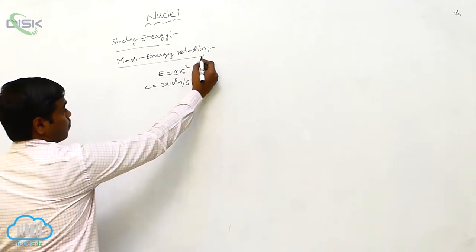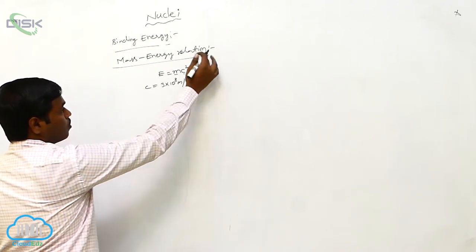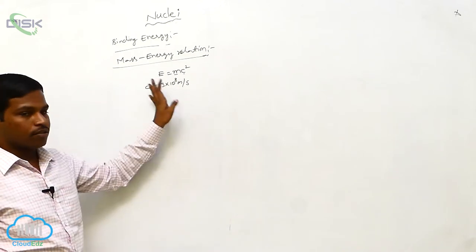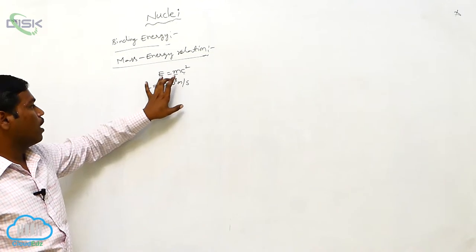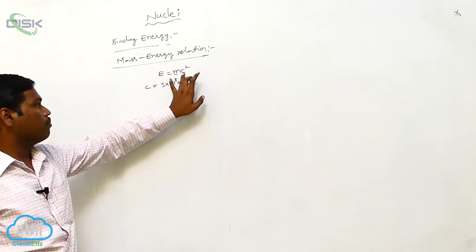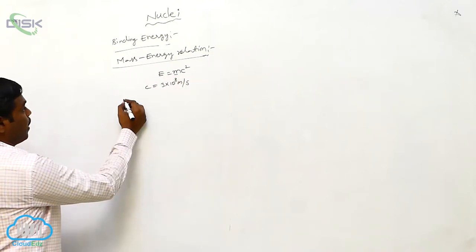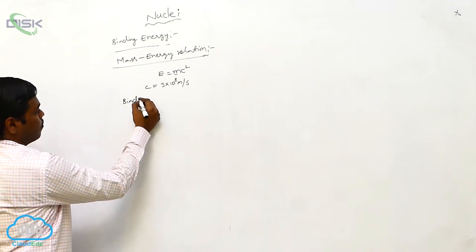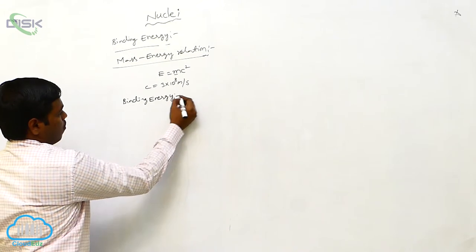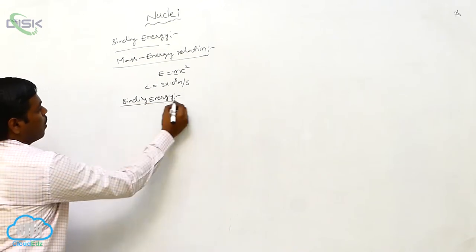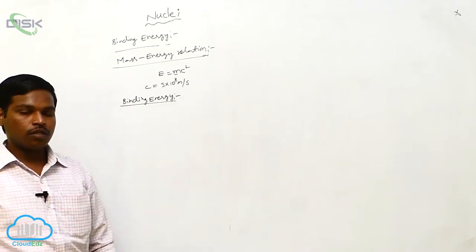That means this neutral matter has some mass, and the equivalent energy is E equals mc squared. Now, binding energy. Binding energy is the energy required to separate the nucleons.